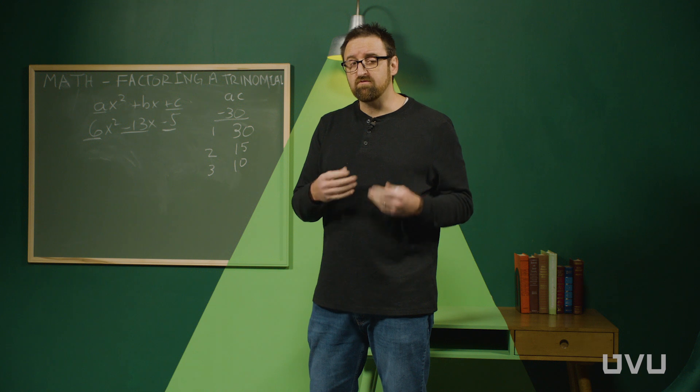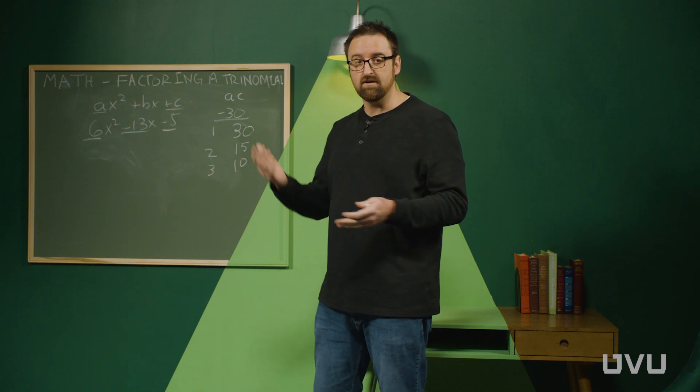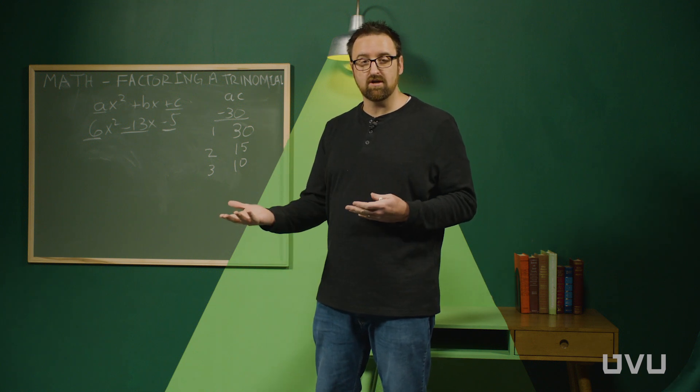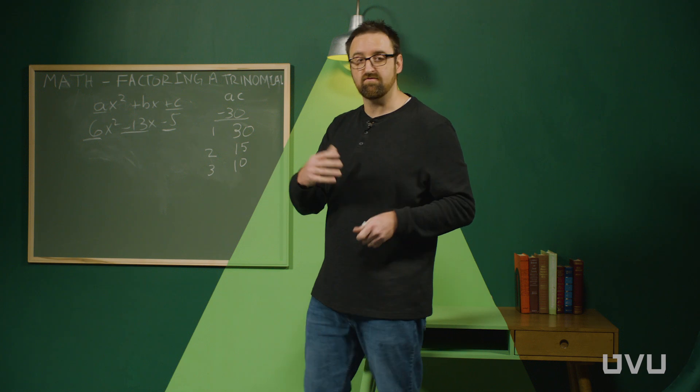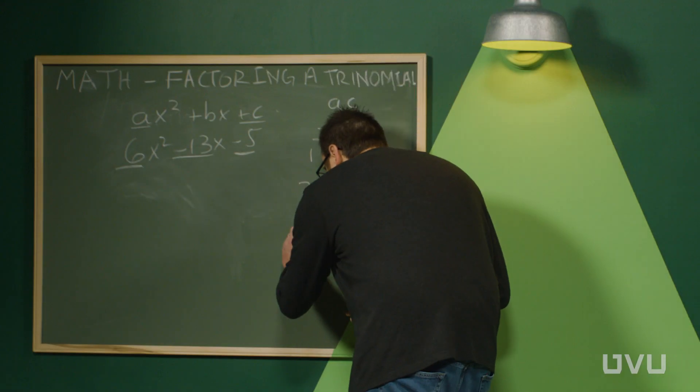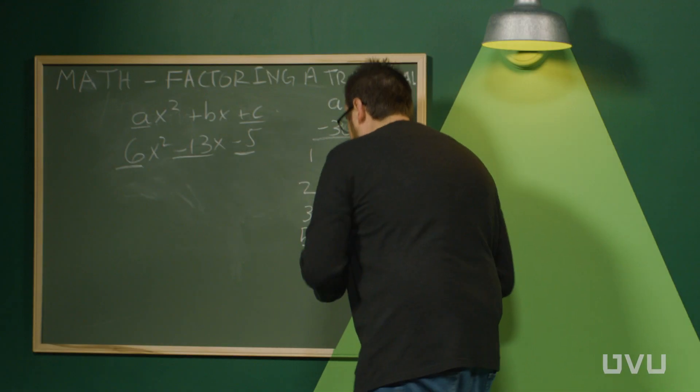We can take a look at 4 but 4 actually isn't a factor here. If you do 30 divided by 4, you don't get a whole number. So we'll skip 4 and we'll go to 5. 5 is a factor and its factor pair is 6.